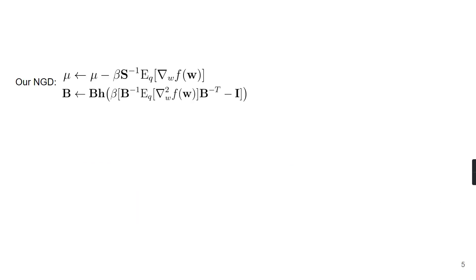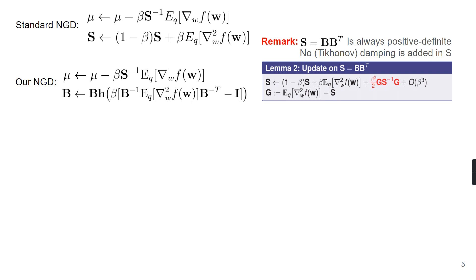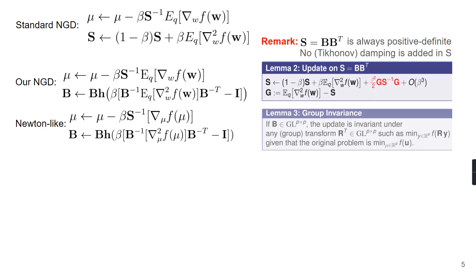In the Gaussian case, our update can be expressed as follows. And we can see that our update in S is always positive-definite, even when f is non-convex, since matrix B is a matrix group member. And we do not use sampling techniques here. And Lemma 2 shows that our update is related to the standard natural gradient descent, where the quadratic term shown in red is used to handle the constraint. By approximating the expectation at the mean, we obtain a Newton-like update for the optimization problem. And Lemma 3 shows that our update like Newton's method has a linear invariance property, which is indeed a group invariance.